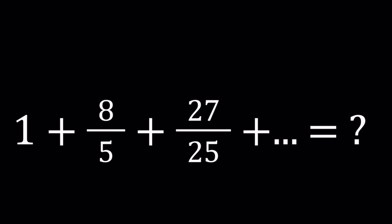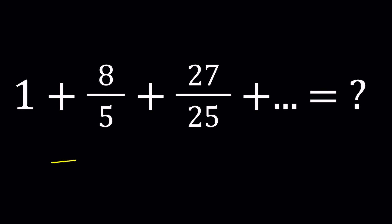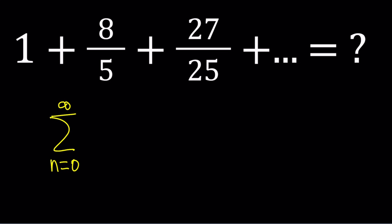So we're going to start by writing this as an infinite sum using the sigma notation. We can write it as the sum from n equals 0 to infinity of (n+1)³ divided by 5 to the power n. It works because if n is 0, you get 1 cubed divided by 5 to the power 0, which is 1, and then n equals 1 gives 2 cubed, and so on.